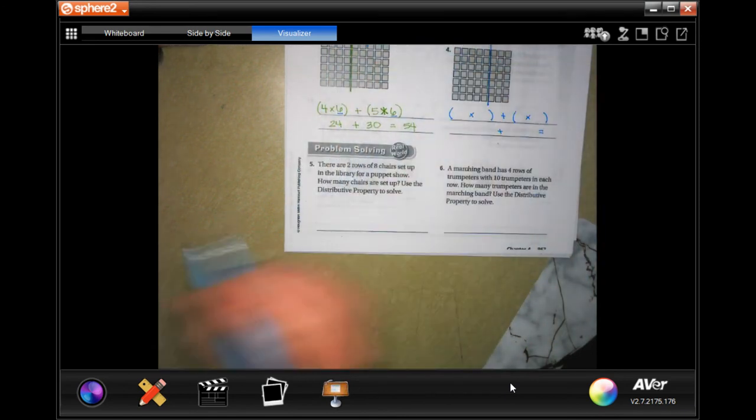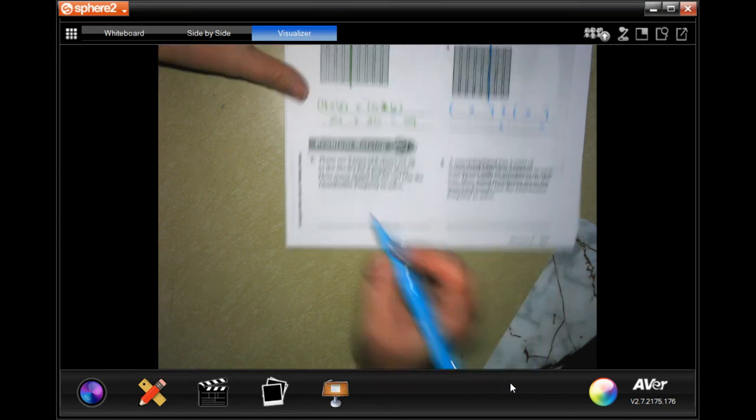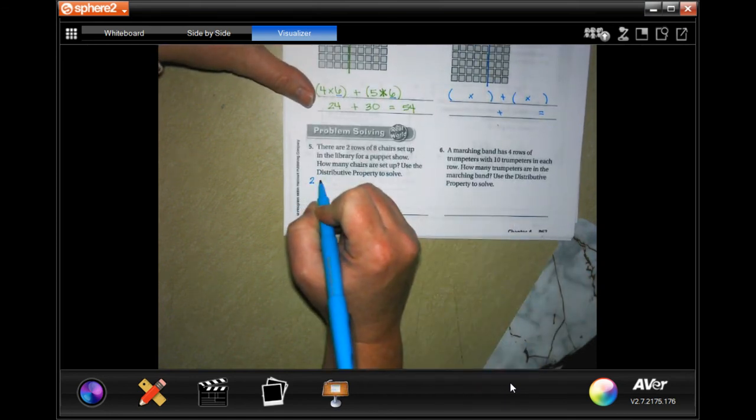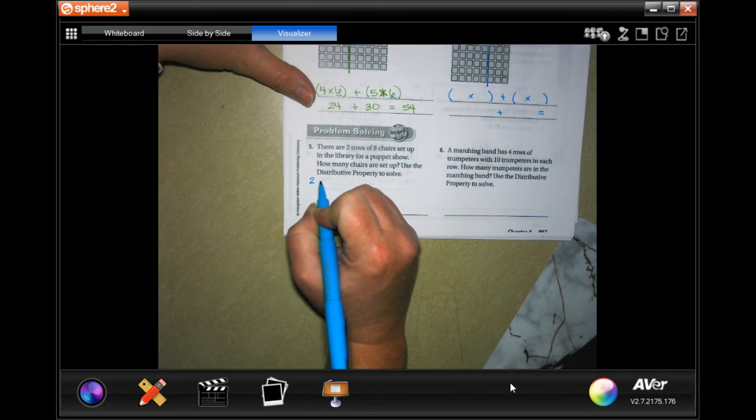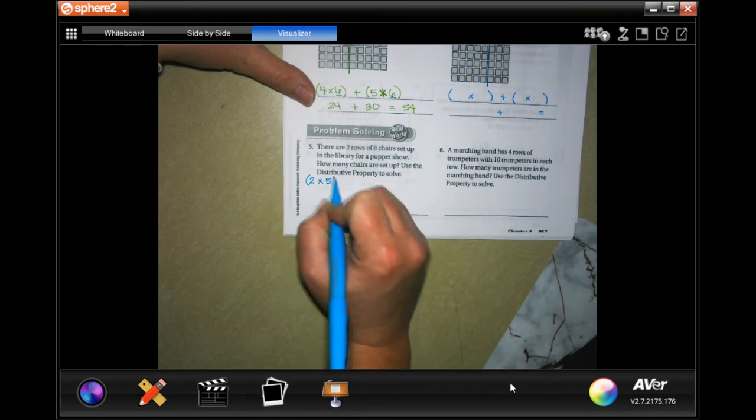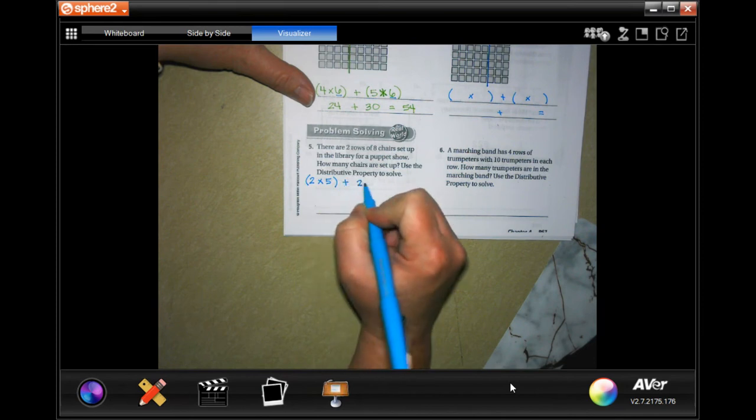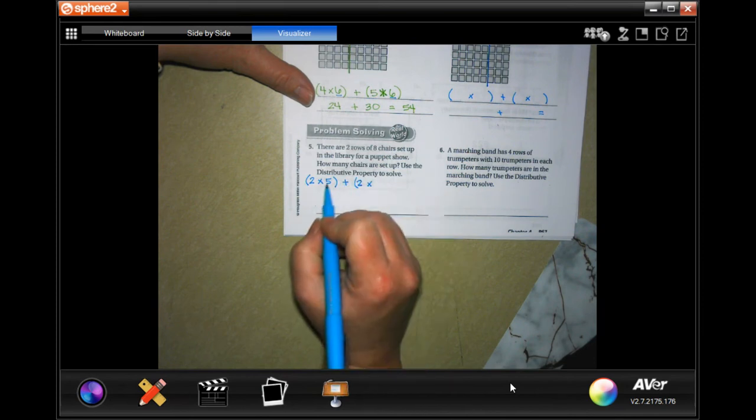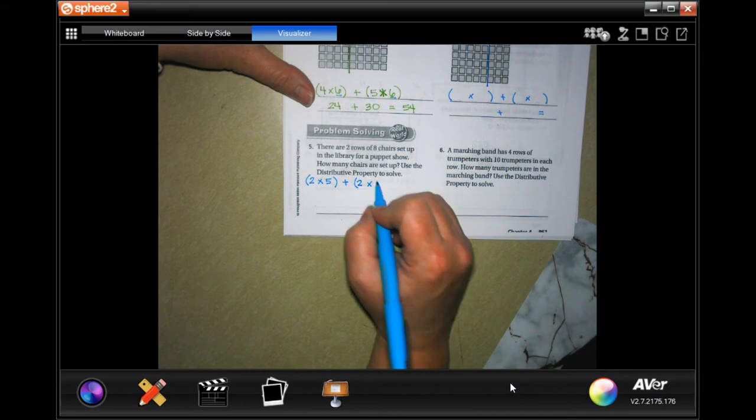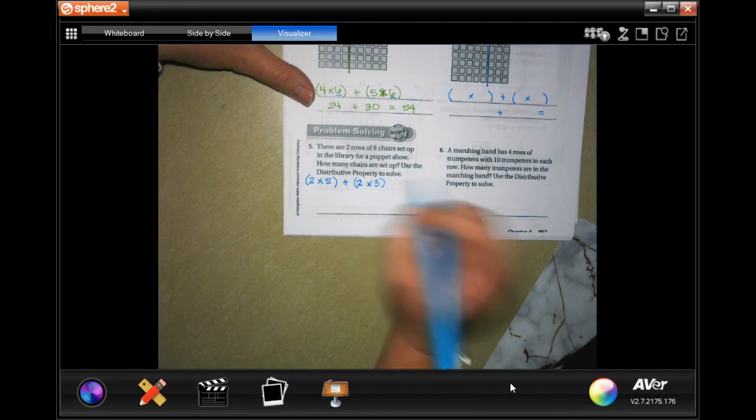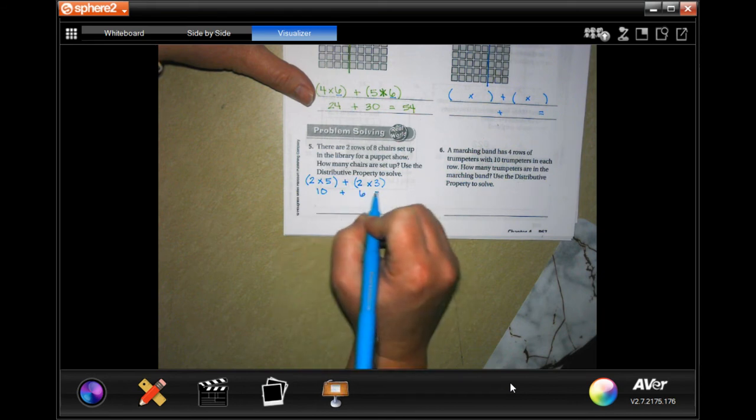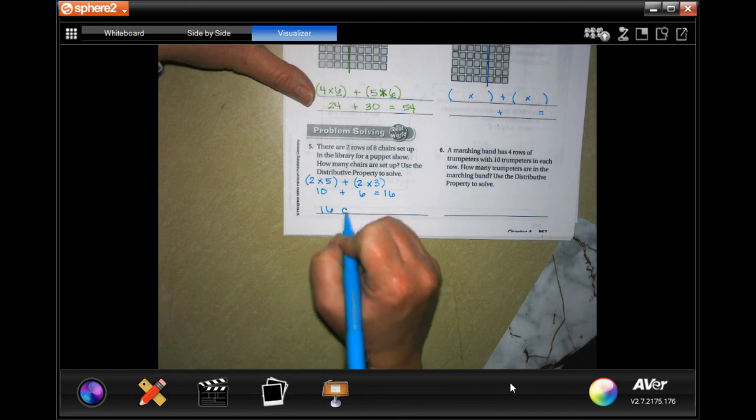So we're going to do two times five plus two times three, because five plus three is eight. So two times three. Now that's 10 plus 6, well that's just 16. So 16 chairs.